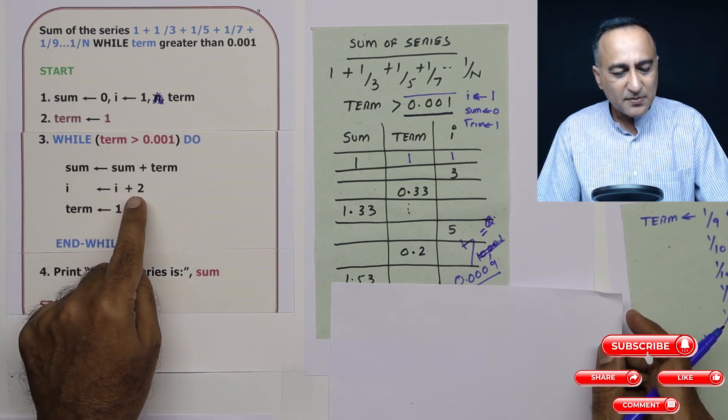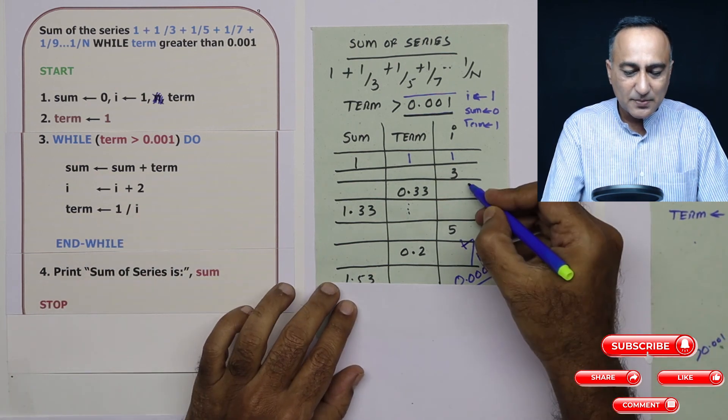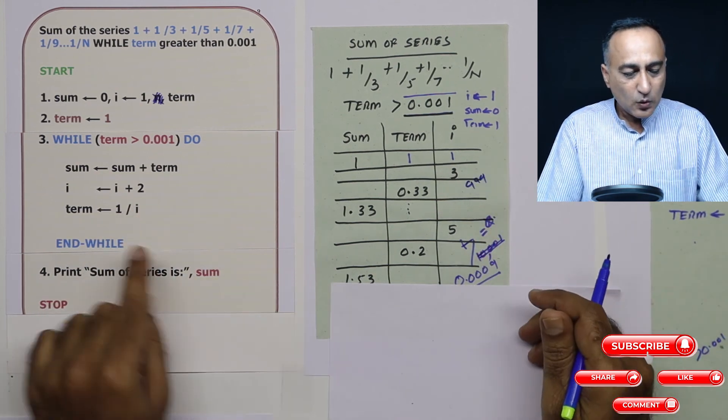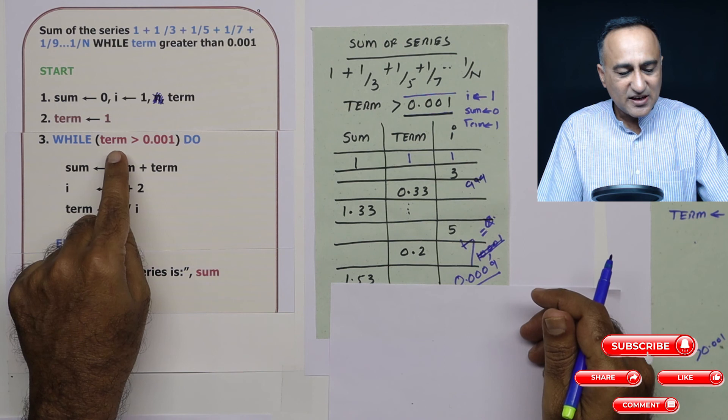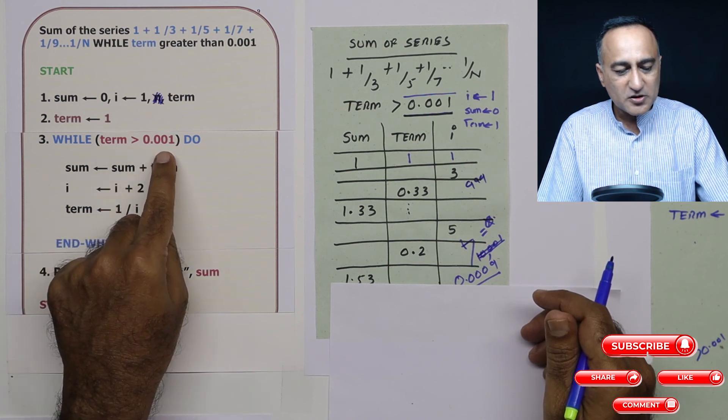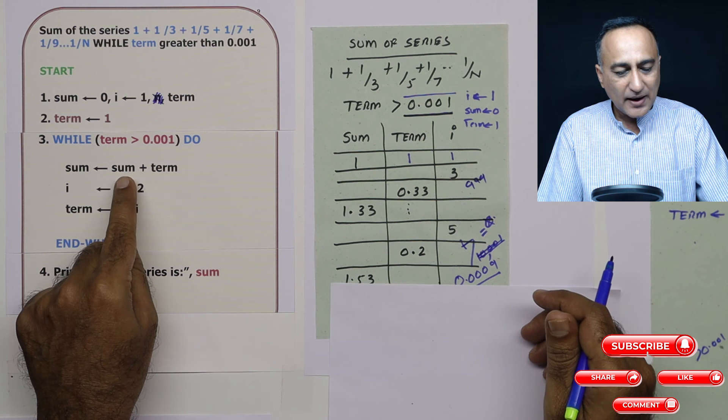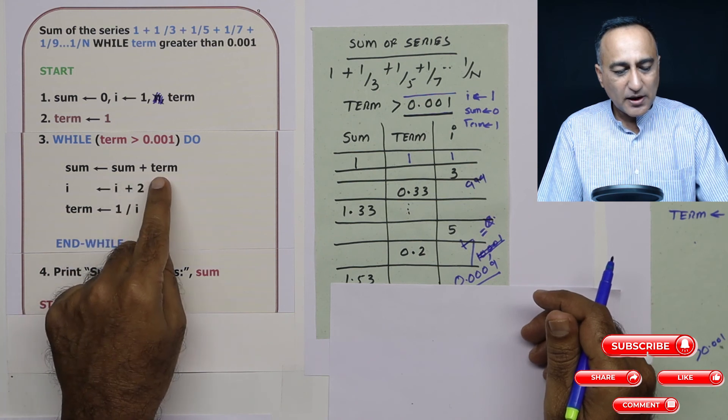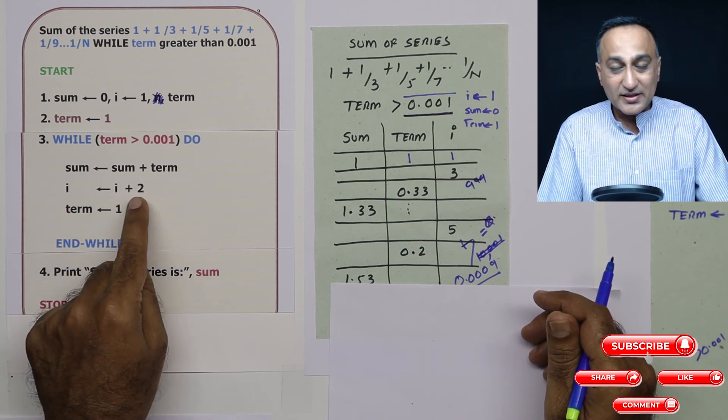At certain point, i will end up becoming let us say i ends up becoming triple nine. One upon triple nine is still going to be greater than 0.001. So it's going to add sum to that value of term. Then i becomes 1001.